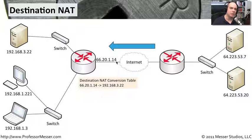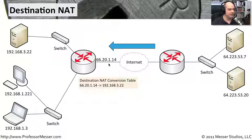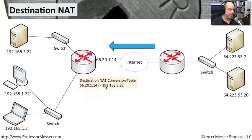...we could say that that should be going to our web server. So what we'll do is if we have an inbound flow and it hits our firewall and it says 66.20.1.14 port 80, I'm going to convert that. I'm going to do a destination NAT and change the destination IP to really be 192.168.3.22.